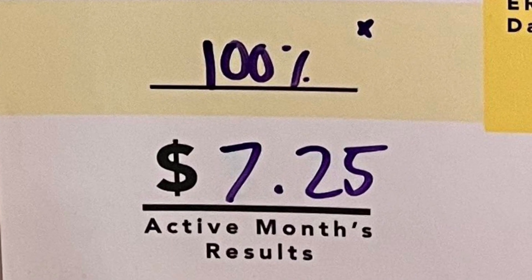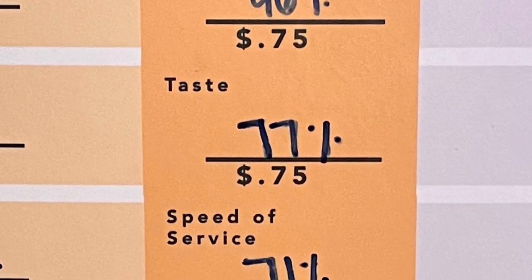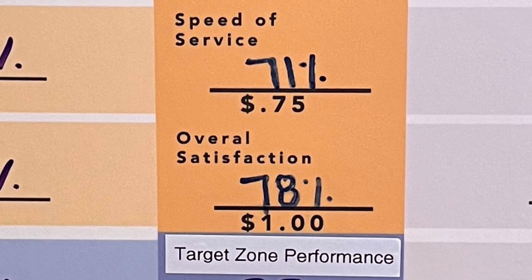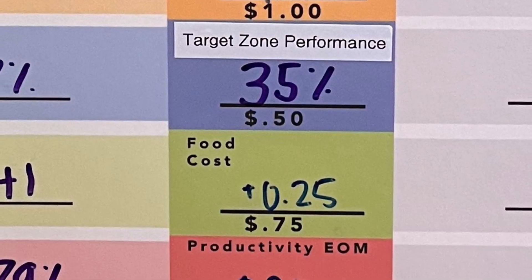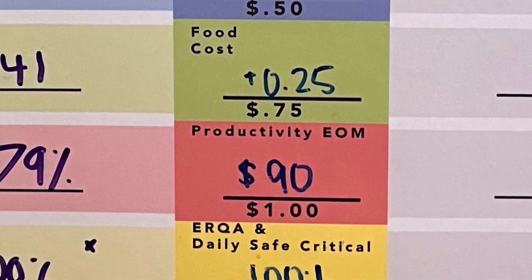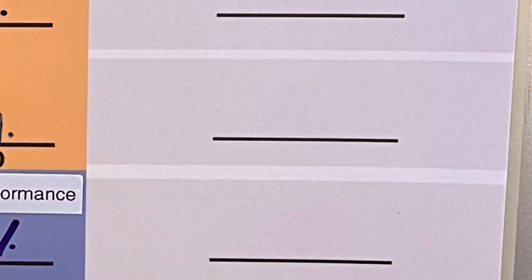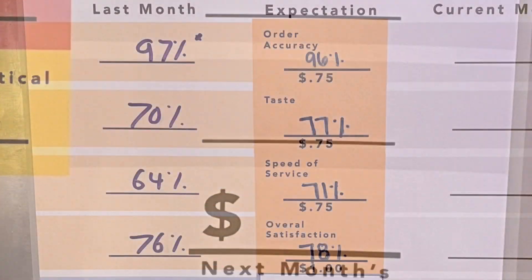In the middle is the expectation — these are the scores we need to be hitting. It is also the associated amount that each item is worth for break food. On the right is where we show updates in between official updates, so that way we know where we are headed.